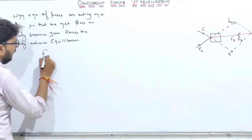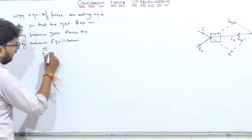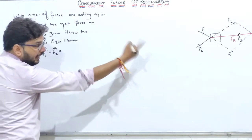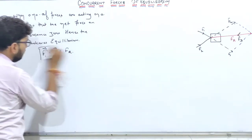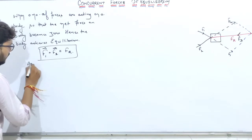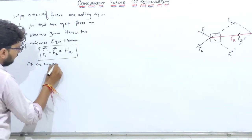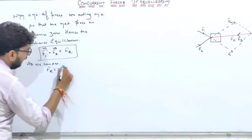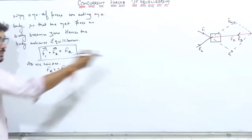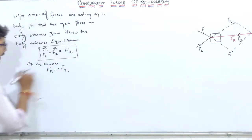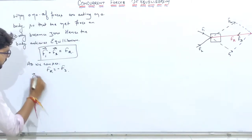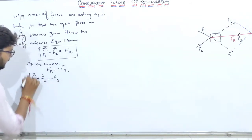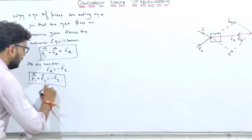That means F1 vector plus F2 vector, and we can see that FR is equal to minus F3 — FR is in the opposite direction of F3. So F1 plus F2 is equal to minus F3. This is the resultant force on this body.